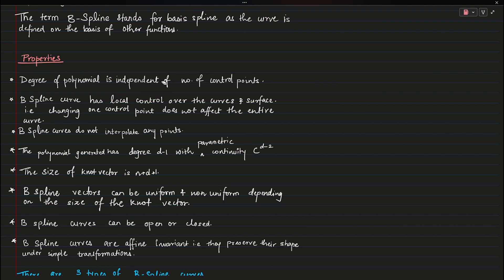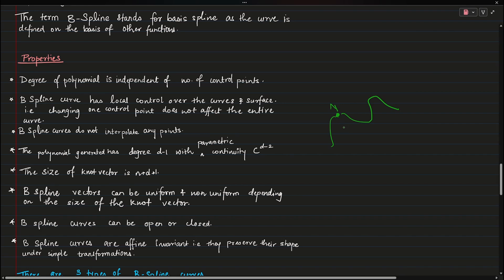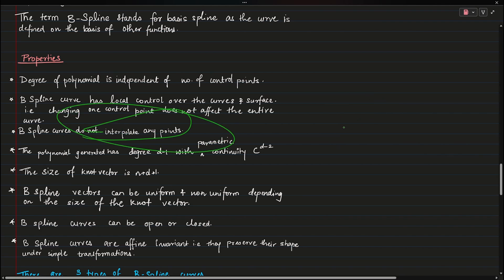B-spline curves have local control. This means that if you move one control point slightly up or down, the entire curve will not be redrawn — only that local region of the curve will be affected depending on how you adjust it.